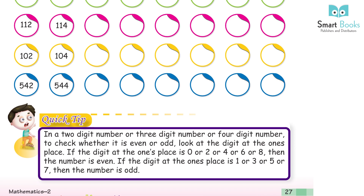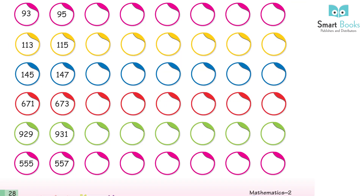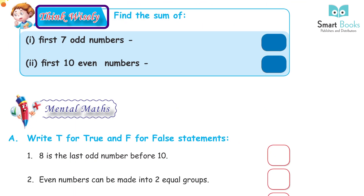If the digit at the ones place is one, three, five, or seven, then the number is odd. Write the even number, write the odd number — think wisely!